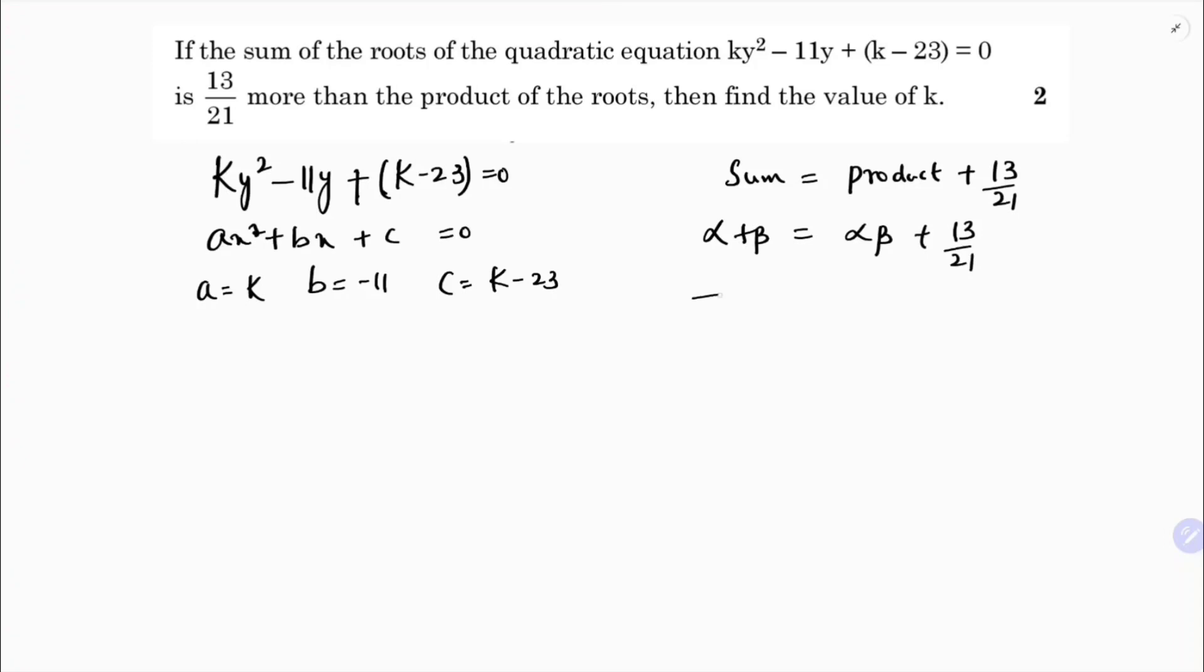Here the total sum α + β equals αβ plus 13/21. So α + β is -b/a equals c/a plus 13/21. So here minus of b, b is -11, by a is k equals c value is k - 23 upon k. Equals 11 plus 13/21.